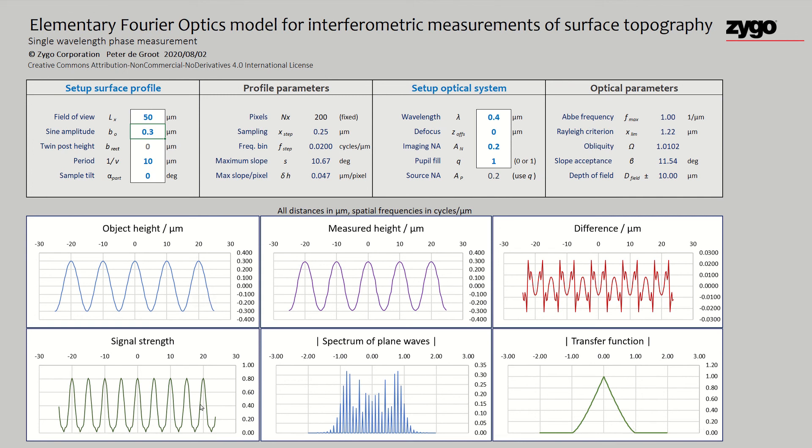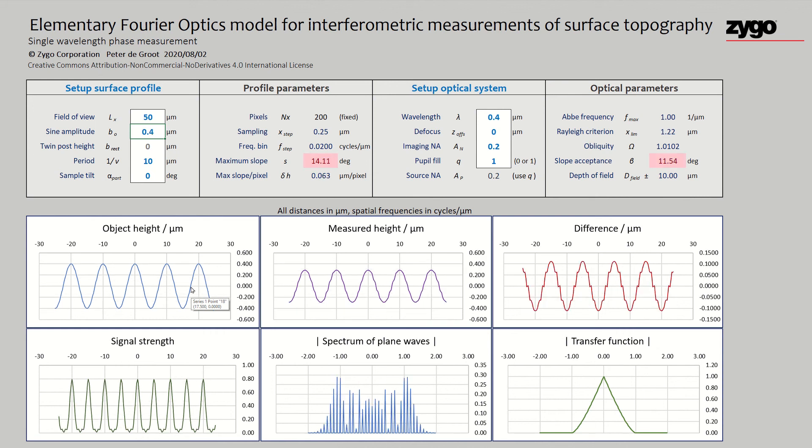The slopes here are so high that we're actually approaching zero signal level. If you really did this in an interferometer, you would start to see some dropouts at the high slopes. Matter of fact, if we keep going, the worksheet will flag that you have exceeded the slope acceptance of the instrument. That's determined by the numerical aperture.